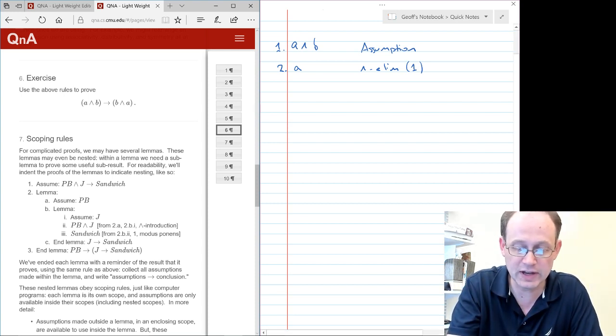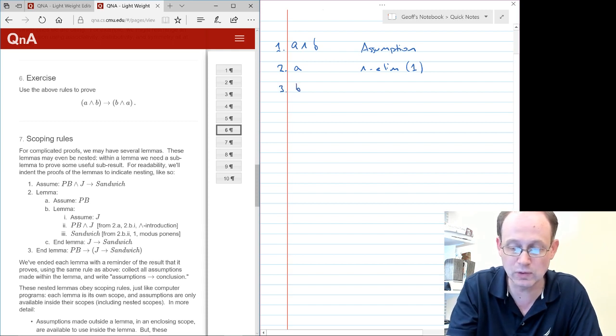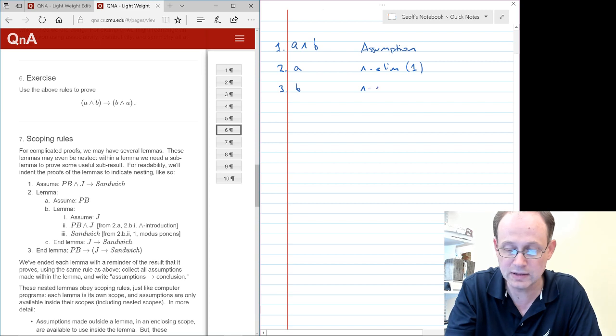So the next line we're going to assume, sorry, we're going to prove that B holds. And that's also by AND elimination from line one.